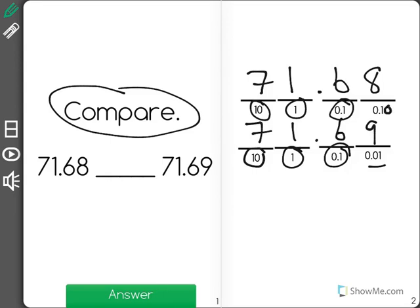And oops, this one should be the hundredths place here. In our hundredths place, the top number has an 8 and the bottom number has a 9, making our bottom number greater.